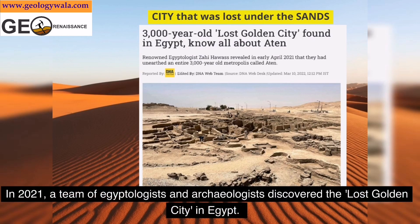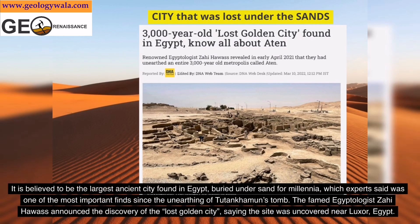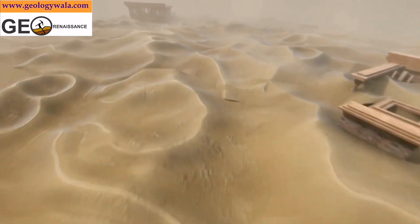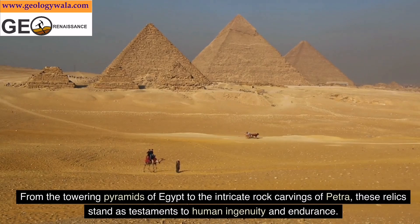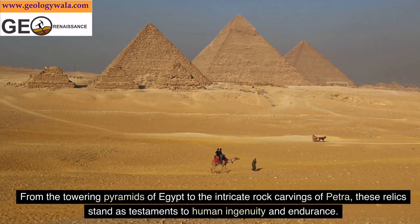In 2021, a team of Egyptologists and archaeologists discovered the Lost Golden City in Egypt. It is believed to be the largest ancient city found in Egypt, buried under sand for millennia — experts called it one of the most important finds since the unearthing of Tutankhamun's tomb. The famed Egyptologist Zahi Hawass announced the discovery, saying the site was uncovered near Luxor, Egypt. From the towering pyramids of Egypt to the intricate rock carvings of Petra, these relics stand as testaments to human ingenuity and endurance.